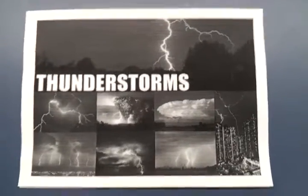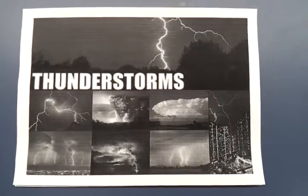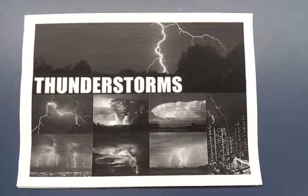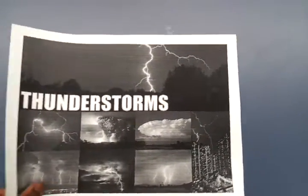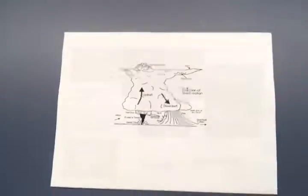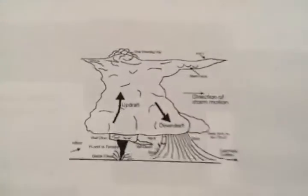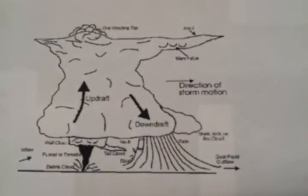Thunderstorms occur when warm, moist air moves upward rapidly. As the air moves upward, it cools, condenses, and creates clouds.